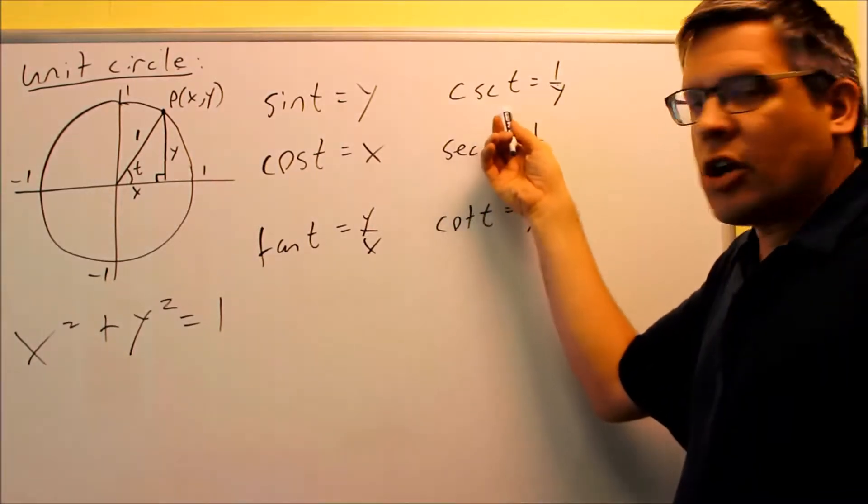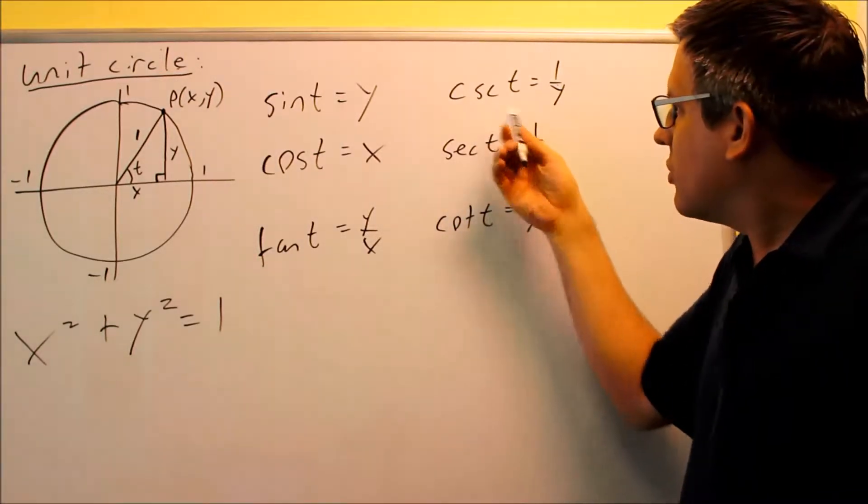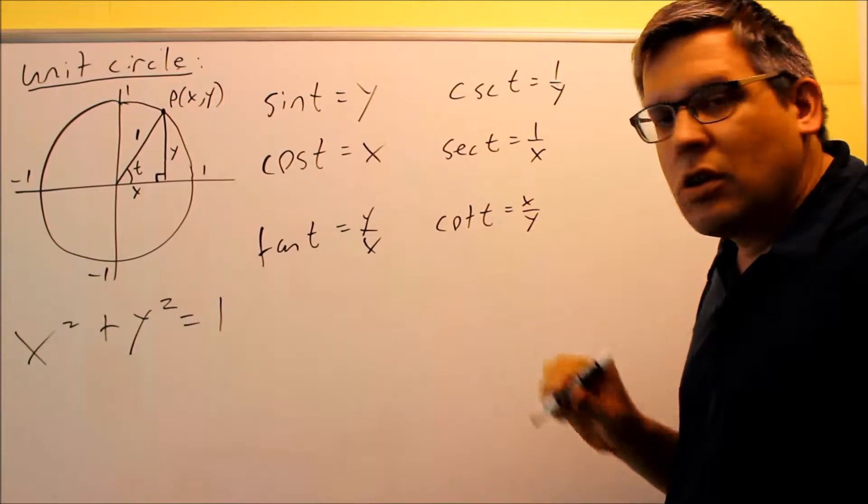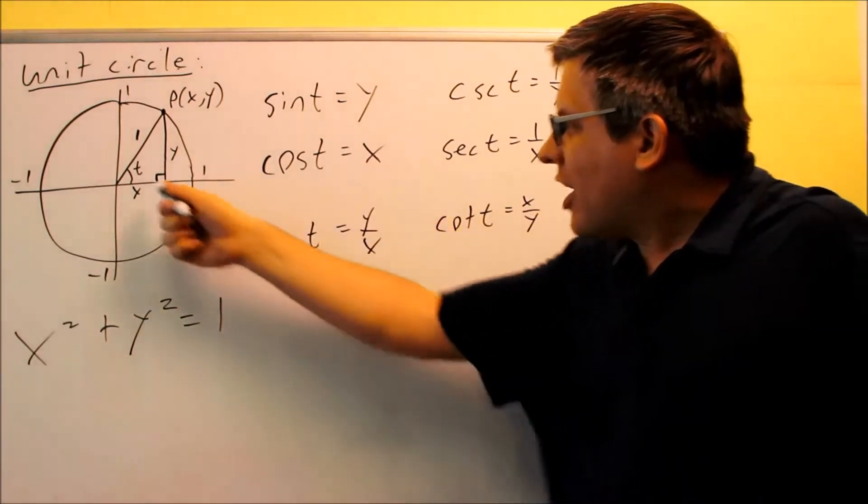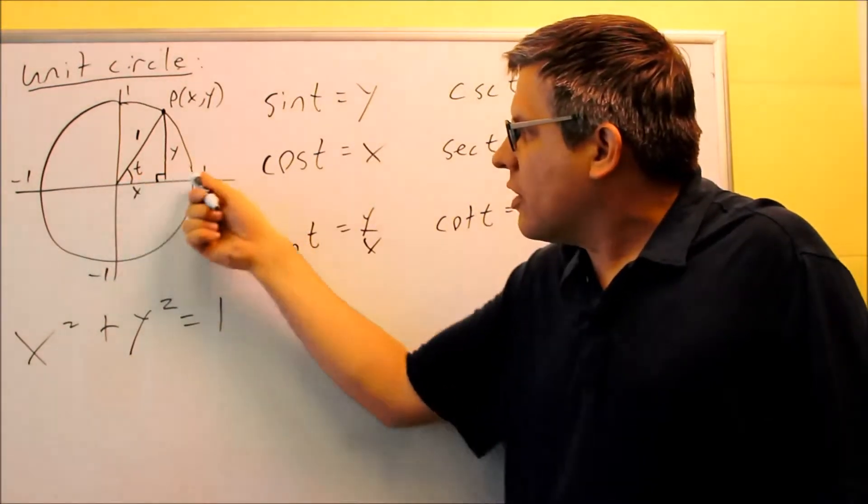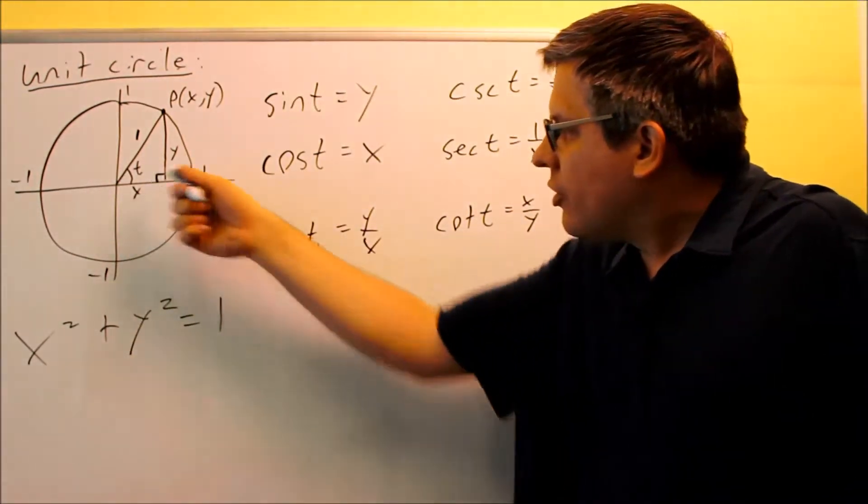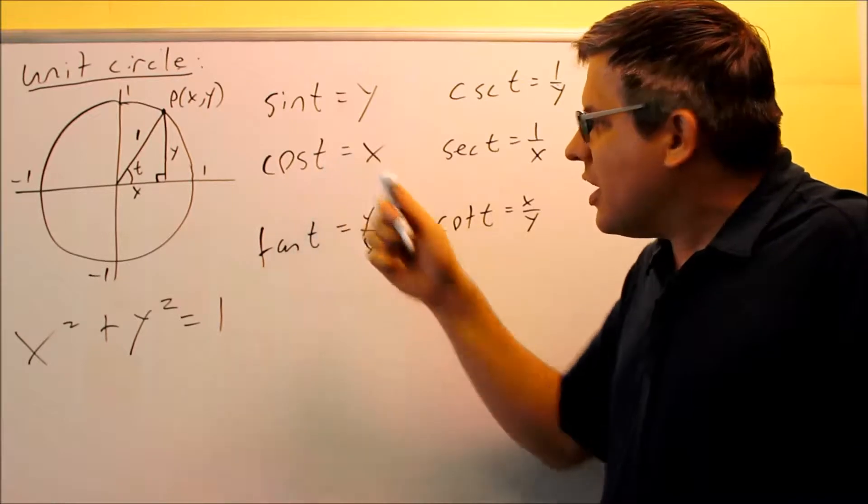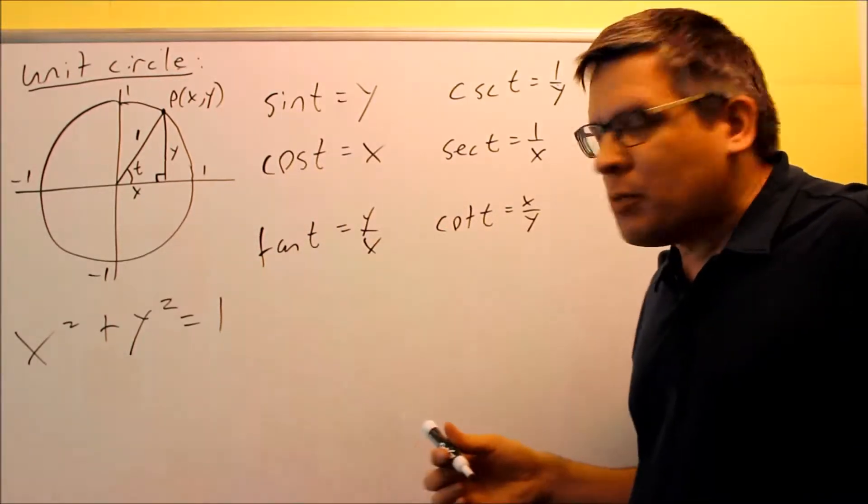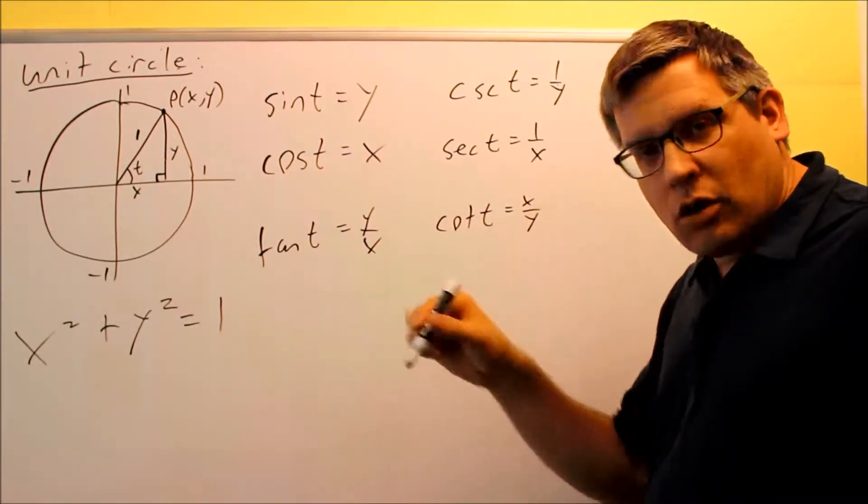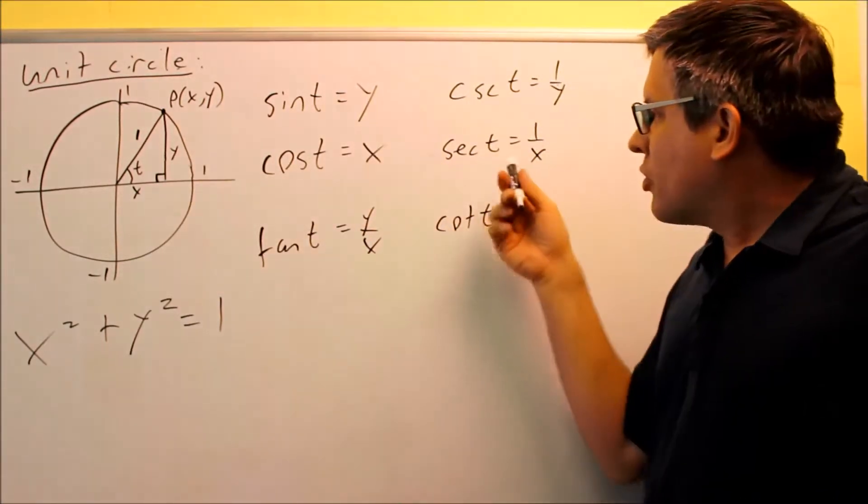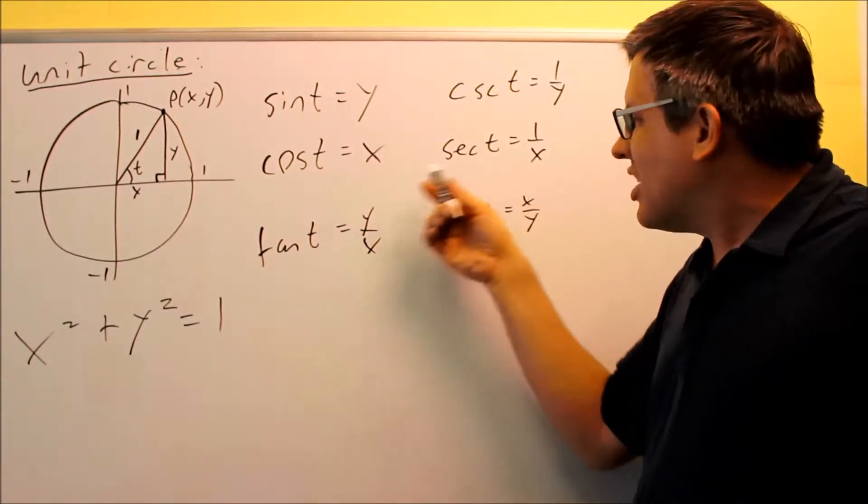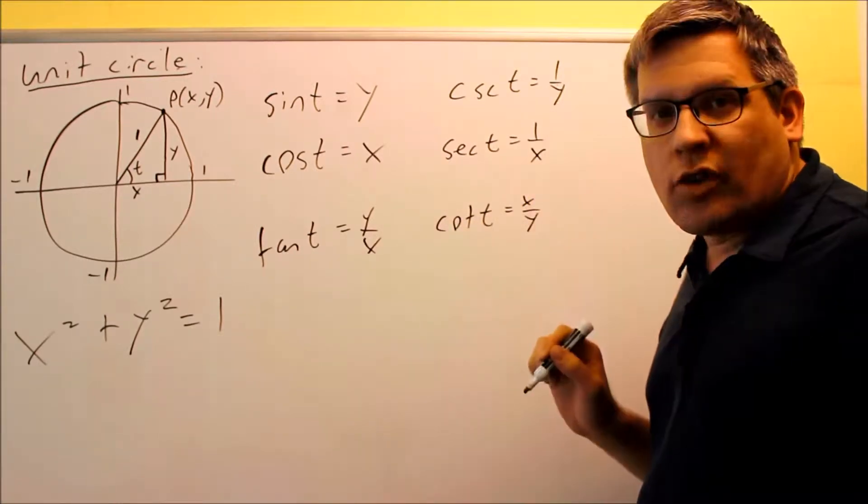Sine t is equal to y. Cosecant t is the reciprocal of y, so 1 over y. Cosine is defined as x. So cosine will always give you the x-coordinate of your triangle there. The t just represents an angle that you're going to be putting in. So you put in an angle, you hit cosine, gives you the x-value of that particular triangle. The reciprocal of it would be secant, so secant t is always 1 over x.